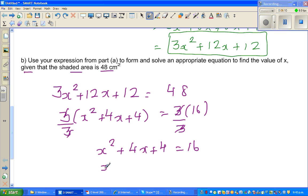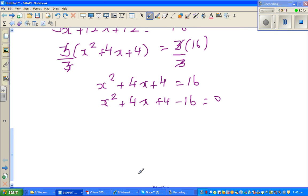If you take over 16 from both sides, x² + 4x + 4 - 16 is equal to 0. So this is x² + 4x - 12 is equal to 0. And now this is pretty easy.